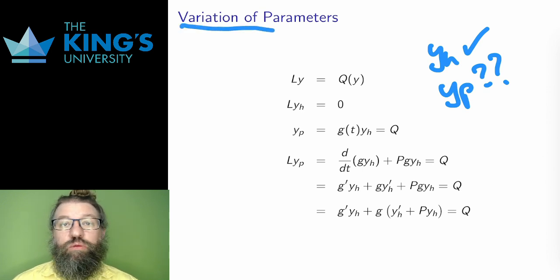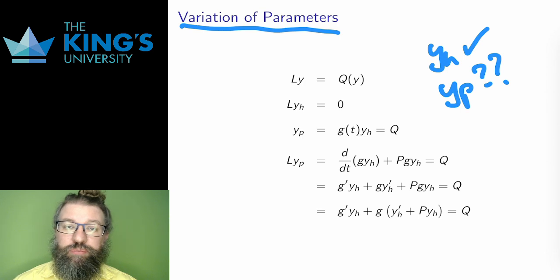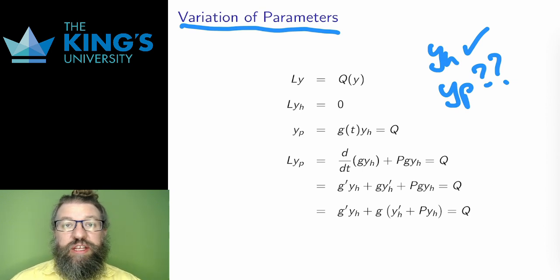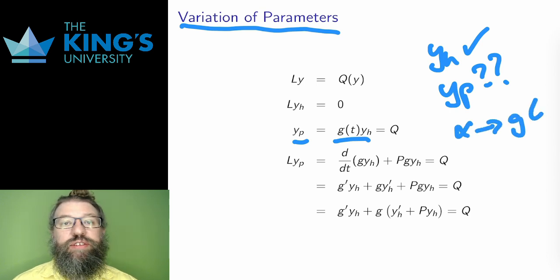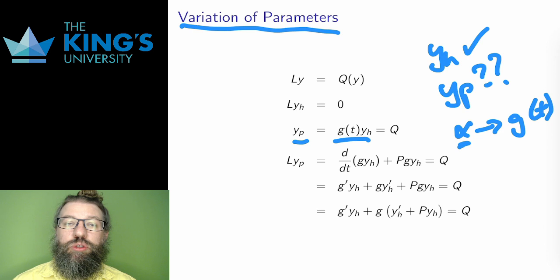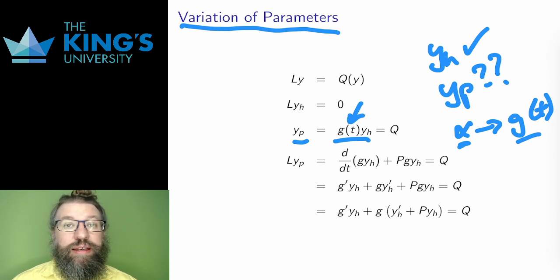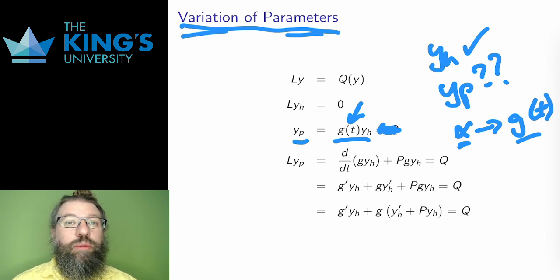There is a general technique called variation of parameters. I want to introduce it because we're going to use it later in the course, even though we're not going to use it directly in examples right now. The idea: the superposition had a particular plus a multiple of the homogeneous. What if I think of the particular as a multiple of y_h, but instead of a constant multiple, the factor is itself a function? I've replaced that constant parameter α with some function g — I've varied the parameter, hence the term variation of parameters.